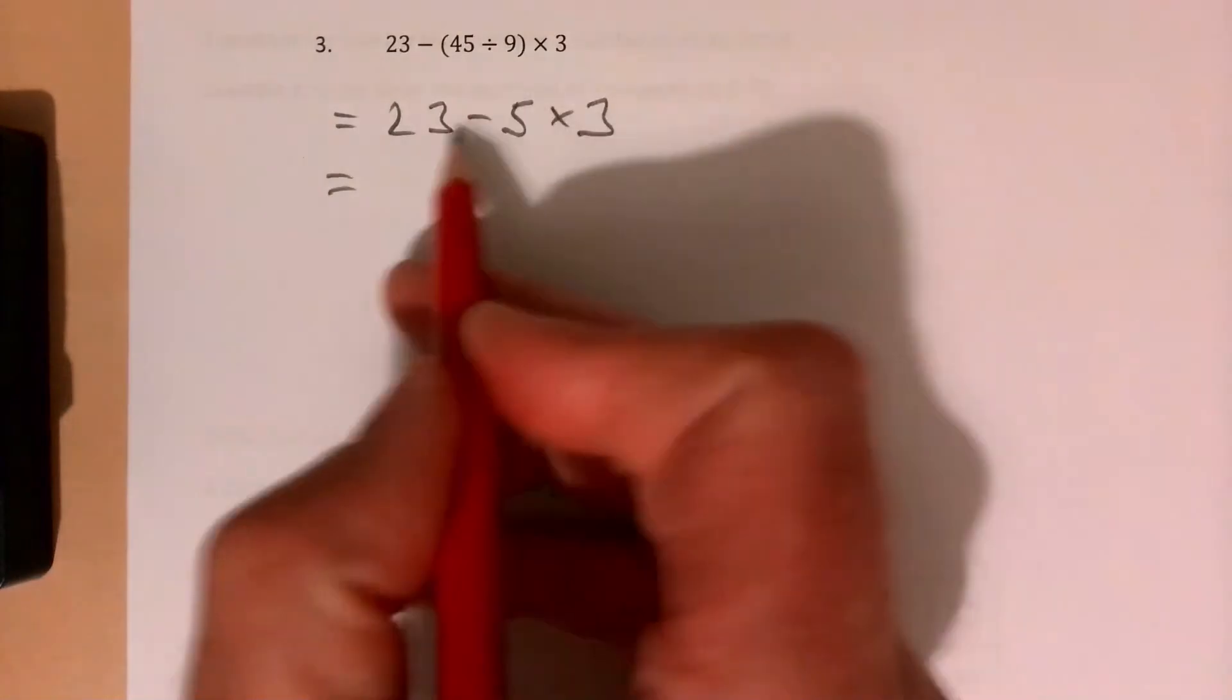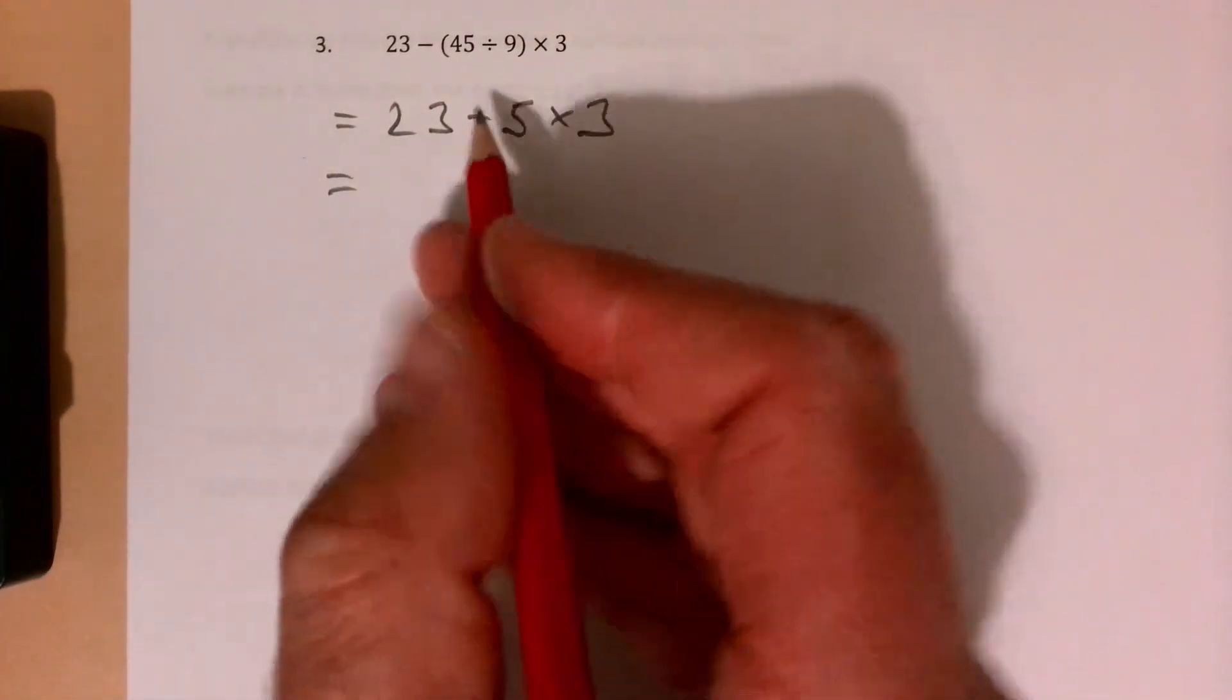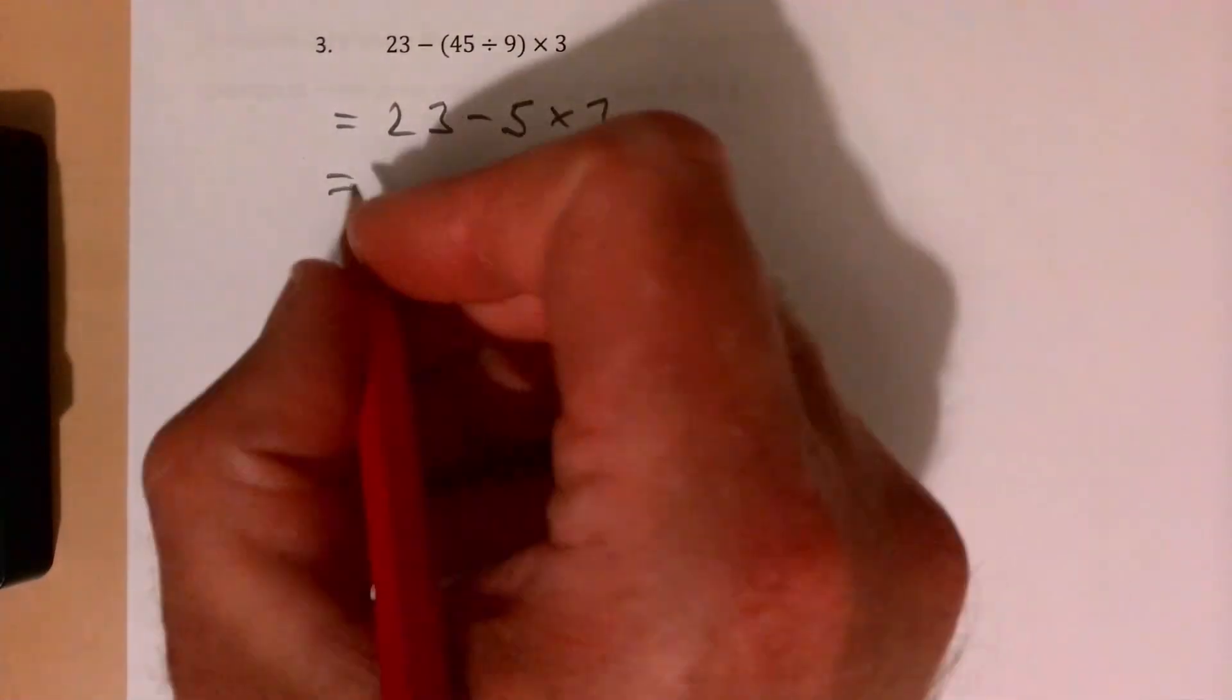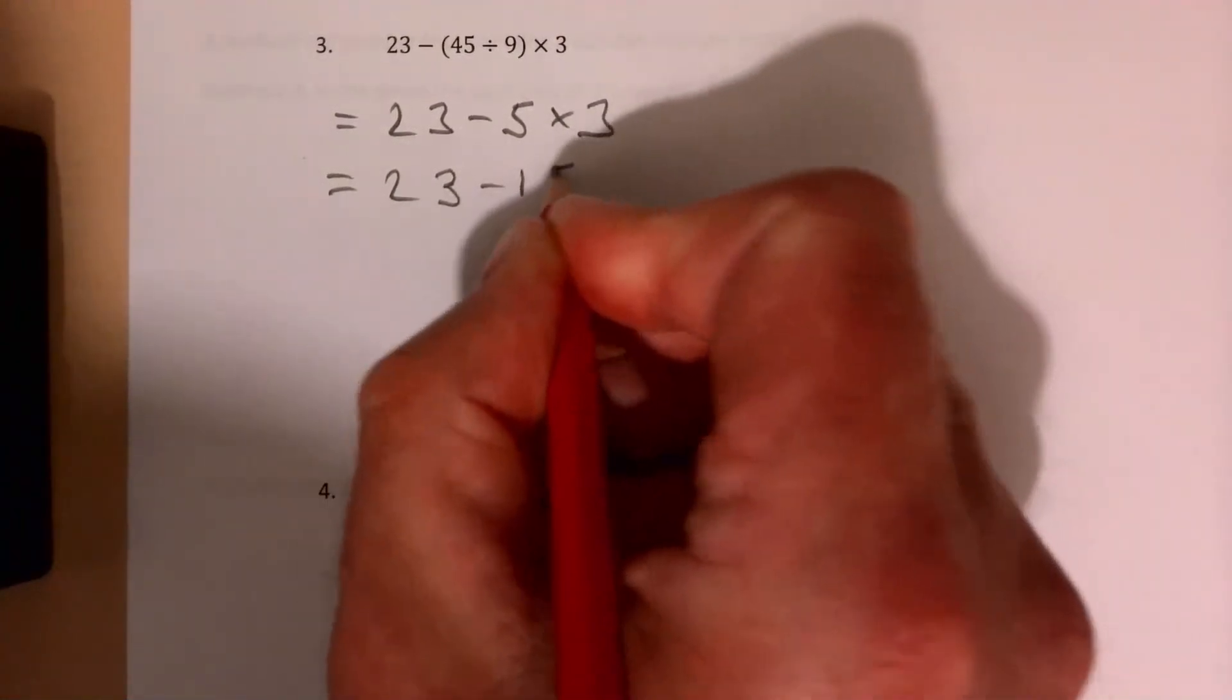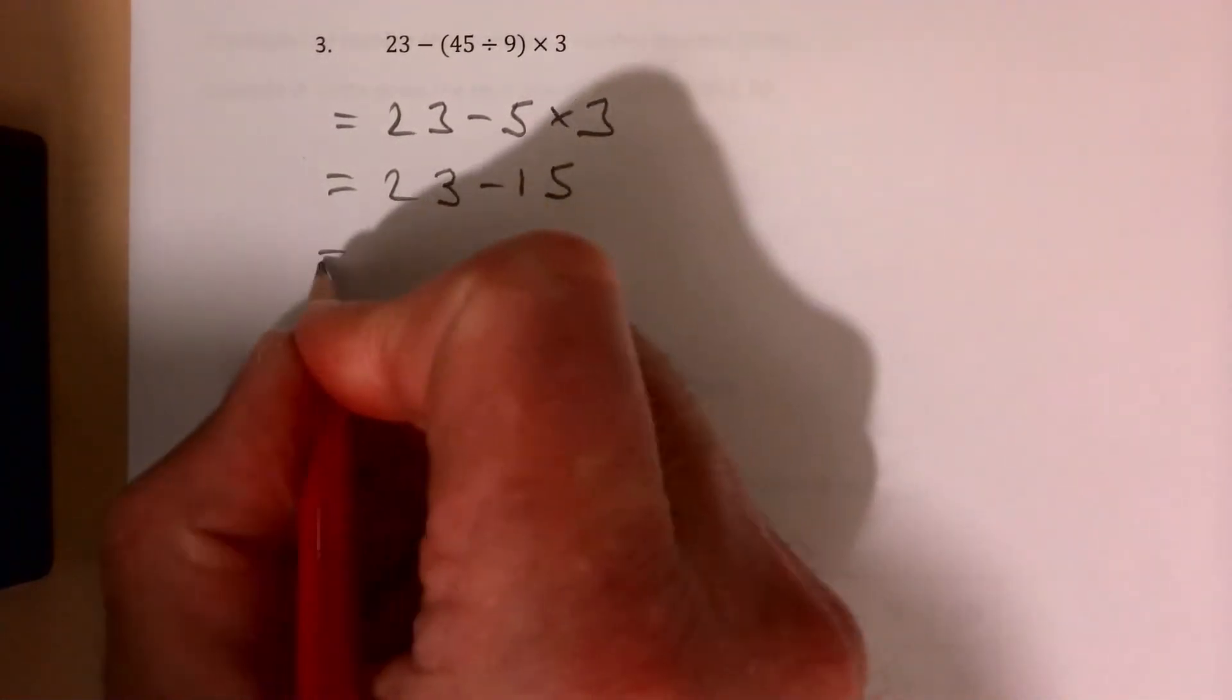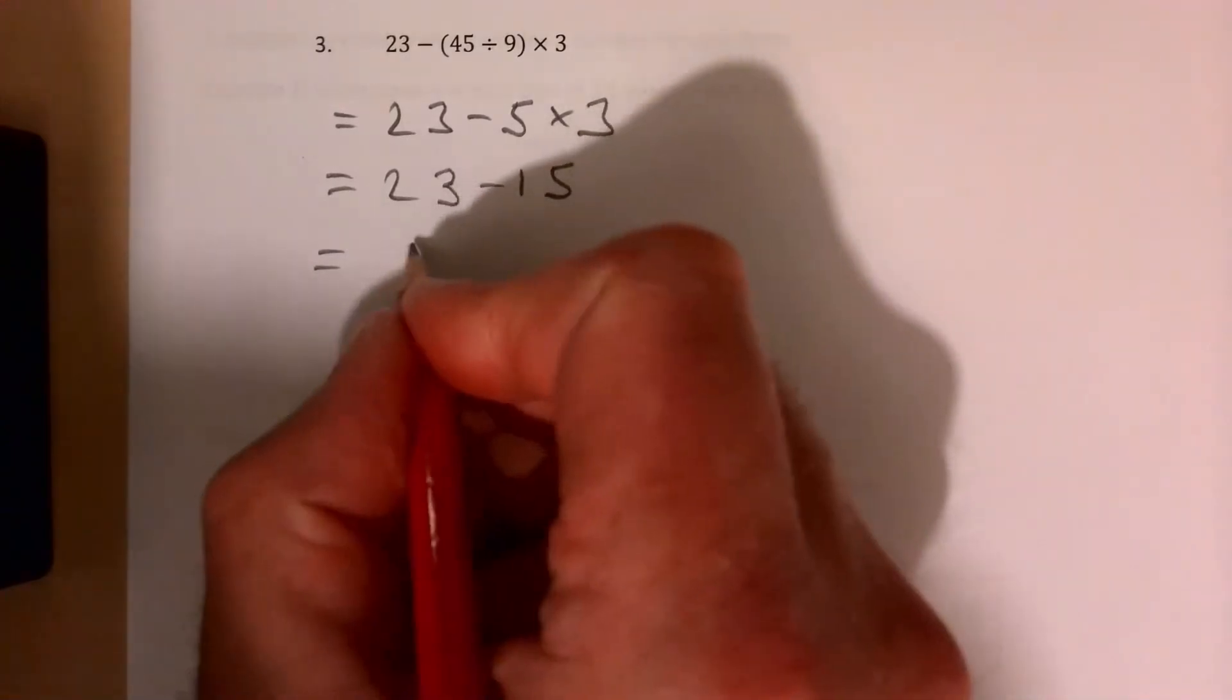So many people will get this one wrong. They'll do the takeaway because it comes first, but obviously we need to do the multiplication first here. This is now 23 take away 15. 23 take away 15 gives us 8.